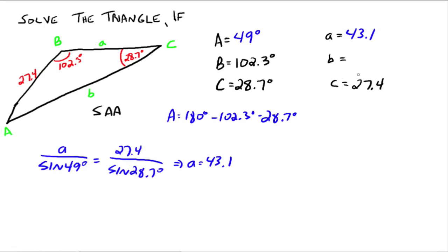So now what we have left to do is find b. So b over the sine of 102.3 degrees has to equal 27.4 divided by the sine of 28.7 degrees again. Do that, and your calculator in b turns out to be 55.8. So 55.8, and we've just solved this triangle.